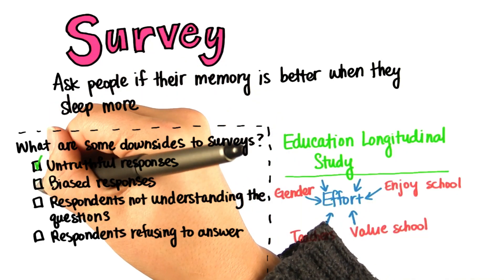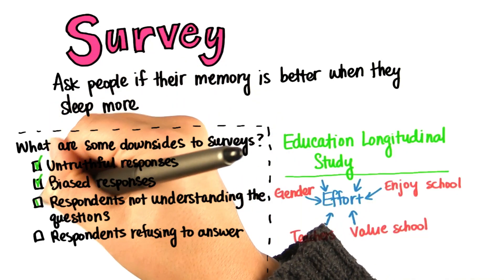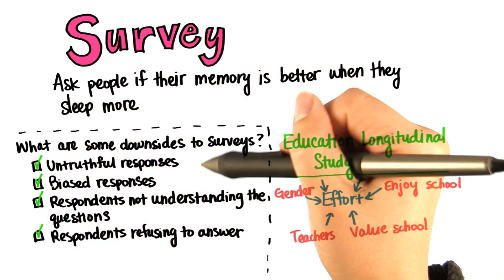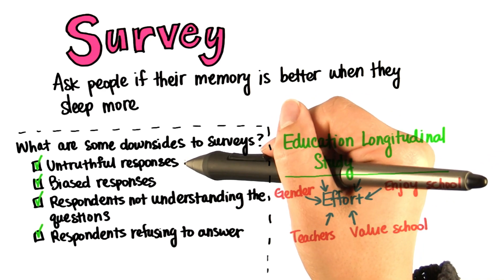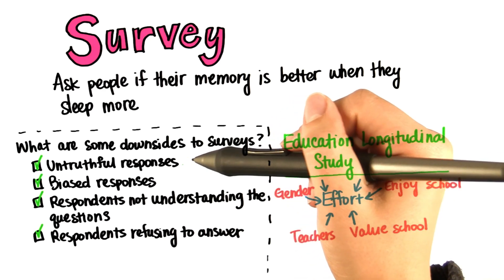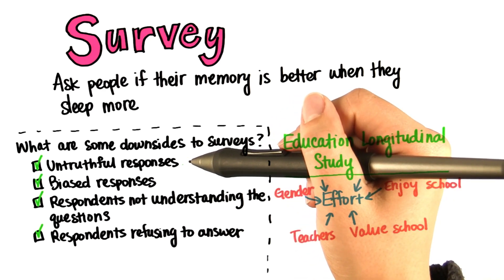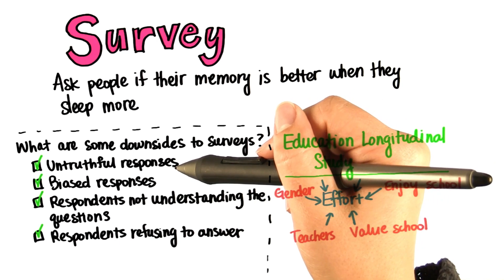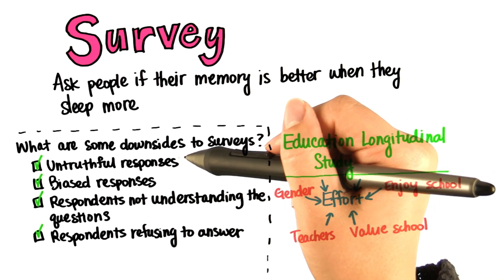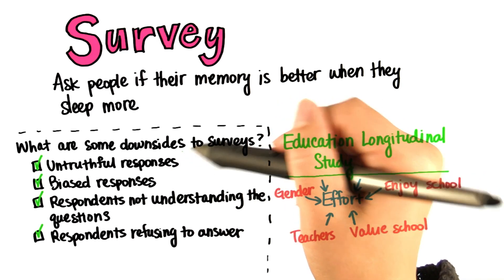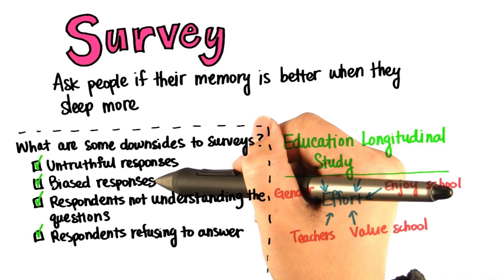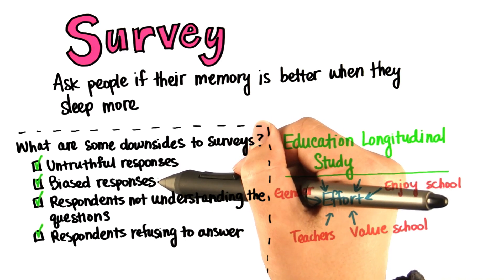All of these are downsides to surveys. We can't always be sure that respondents are answering truthfully. Even if surveys are anonymous, people don't always give the truth for some reason — it's probably a psychological thing. And oftentimes, without realizing it, we give biased answers.